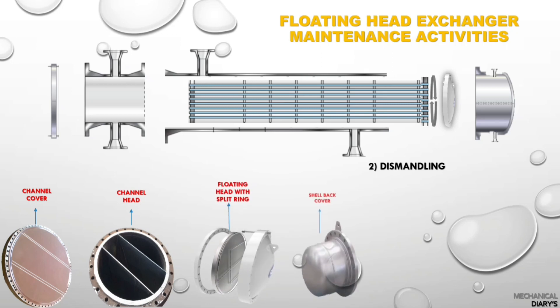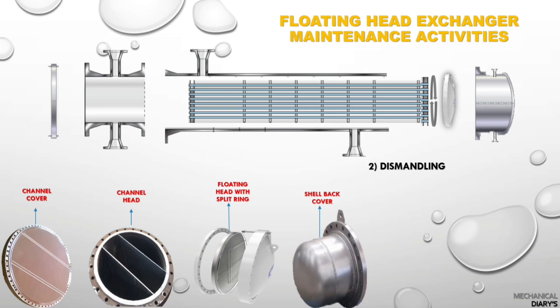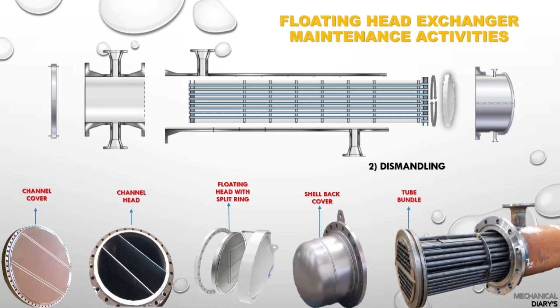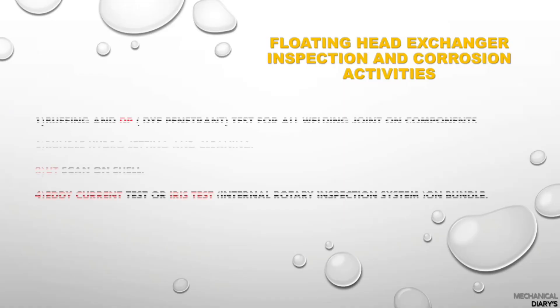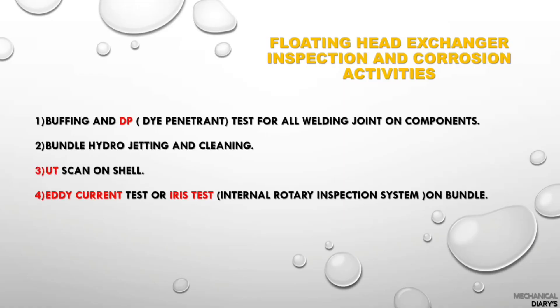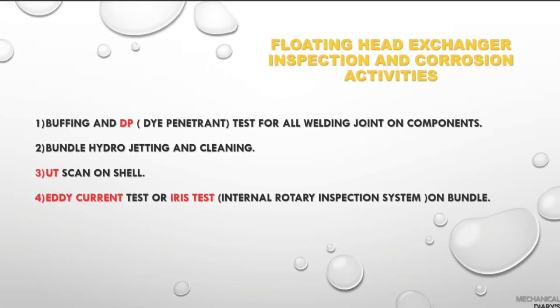Dismantling has a specific procedure. First, remove the channel head cover, then the shell back cover, then the floating head, then the channel head. Last, pull out the tube bundle. Once you pull out the bundle you can start the inspection and correction activities.